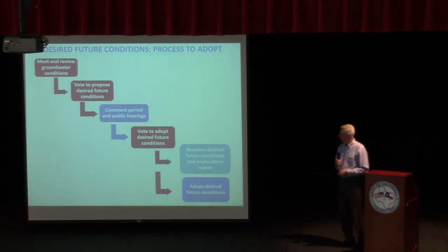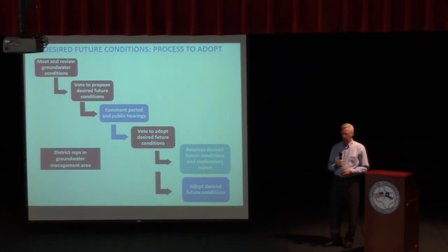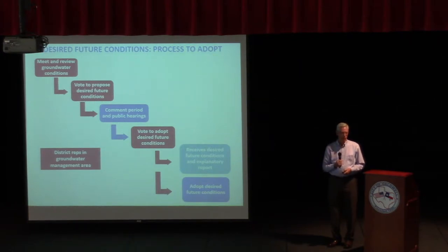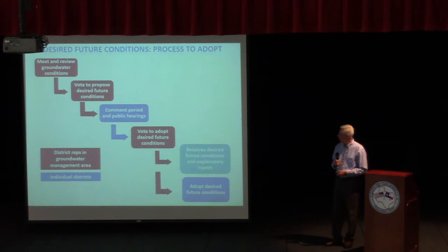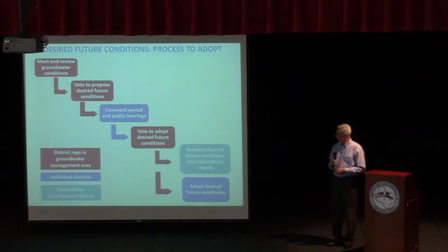There are three main groups involved in the process. First, in red, the district representatives in the groundwater management area — these are groundwater conservation districts by law. Most of these district representatives are the general managers of the districts, though it can be a board member or board president. Then there are the individual districts themselves — the actual district including the board and citizens within it. And then the other player in this process is us, the Water Development Board.